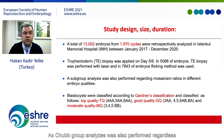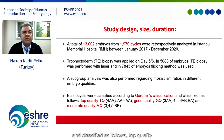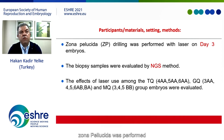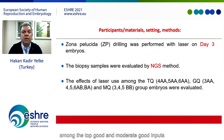A subgroup analysis was also performed regarding mosaicism ratios in different embryo qualities. Blastocysts were classified according to Gardner's classification as top quality, good quality, and moderate quality. Zona pellucida drilling was performed with laser on day 3. The NGS method was used for analysis. The effects of laser among top, good, and moderate quality embryos were evaluated.